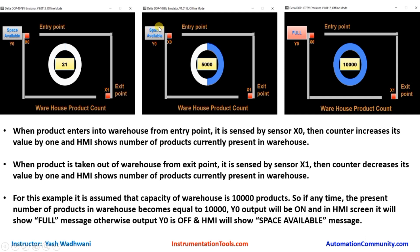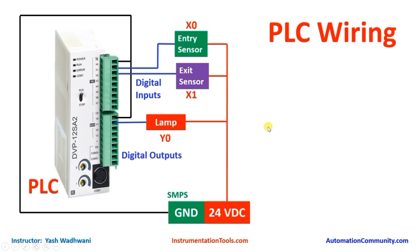Here you can see it is showing space available. Now let us understand the wiring required to create this project. In the source/sink of the input, we will connect the ground terminal of our SMPS. We have two digital inputs: an entry sensor and an exit sensor, which can be proximity sensors. We will connect 24-volt supply to one terminal of each sensor.